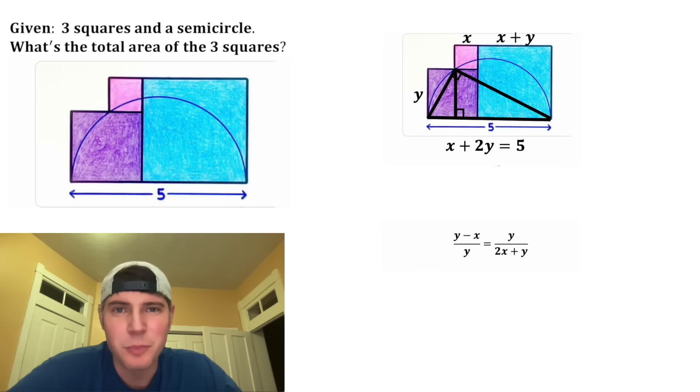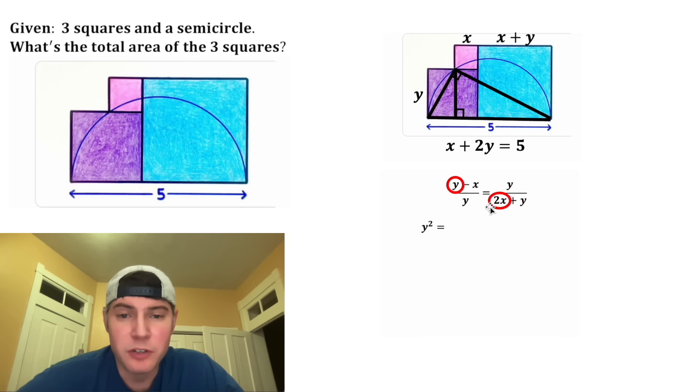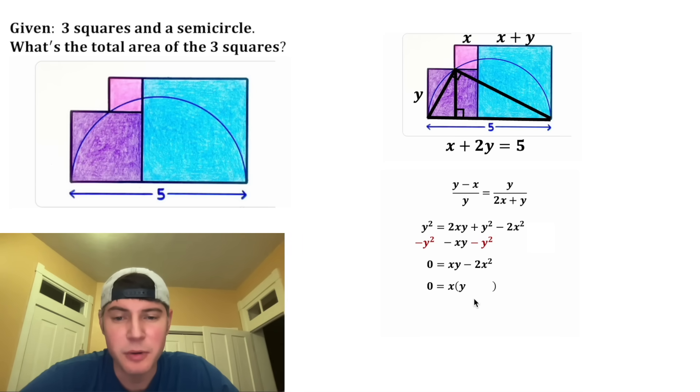And now to solve this proportion we're going to cross multiply. So we'll do Y times Y which gives us Y squared. And on the right-hand side we're going to have to FOIL or distribute. We'll have to do Y times 2X which is 2XY, plus Y times Y which is Y squared, minus X times 2X which is negative 2X squared, minus X times Y which is negative XY. From here we can subtract Y squared from both sides. And on the right-hand side we can combine like terms. So let's bring this negative XY right here. On the left-hand side, Y squared minus Y squared is zero. And on the right-hand side, 2XY minus XY is XY. Y squared minus Y squared is nothing, and then we can bring down the negative 2X squared. From here we can factor out the common X. X times what gives us XY? Well, that's going to be Y. And then X times what gives us negative 2X squared? Well, that's negative 2X. And then from here, the only way this can be true is if either one of these is equal to zero.